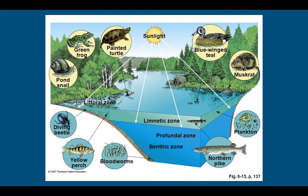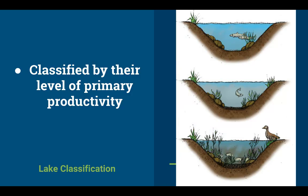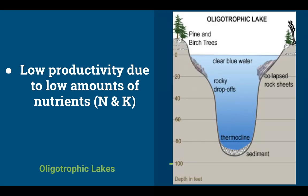We can also categorize lakes and ponds by their level of primary productivity. Primary producers are your autotrophs — your plants. The more abundant and diverse the plant life, the more other species it can support. Oligotrophic lakes have the least productivity — they don't have many nutrients like nitrogen and potassium. These are your high mountain lakes with clear blue water but not much life.